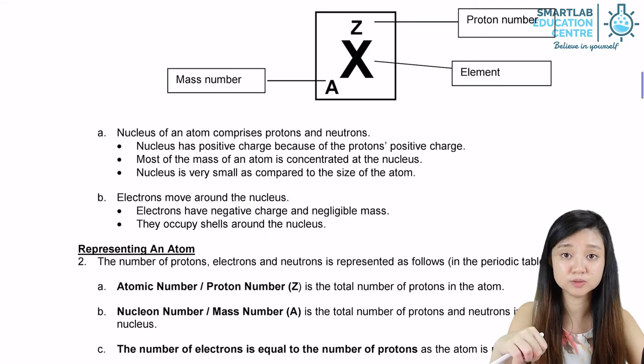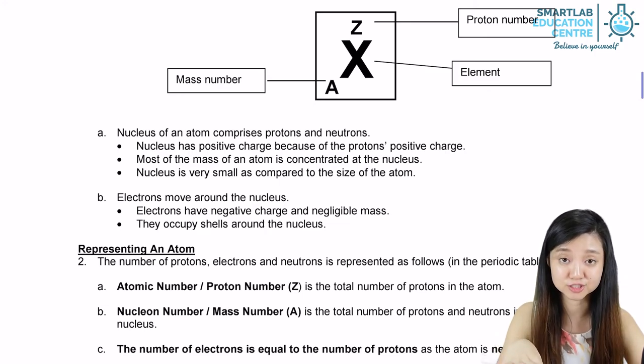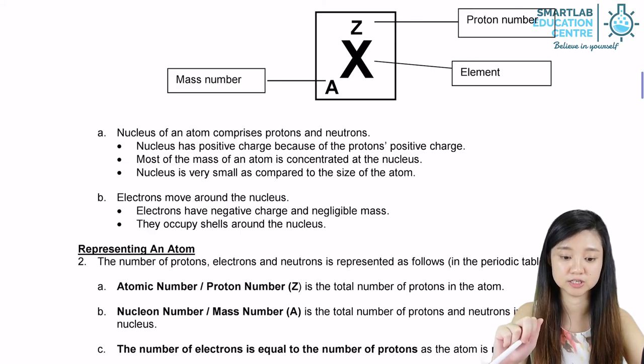As for the electrons, they actually move around the nucleus in electron shells, and they all have negative charge and negligible mass as we mentioned earlier.